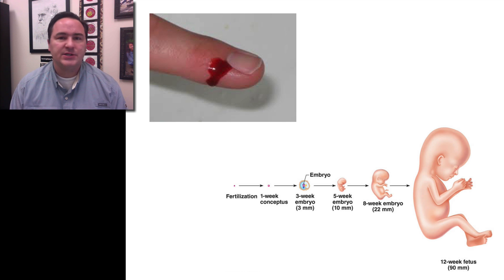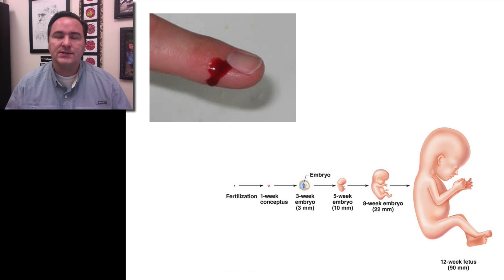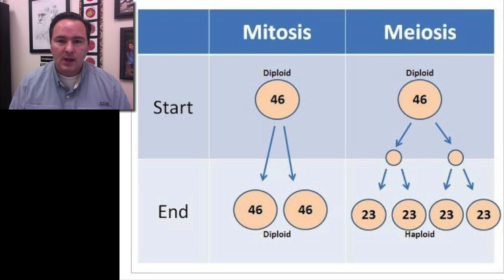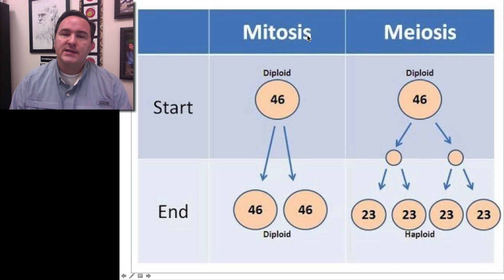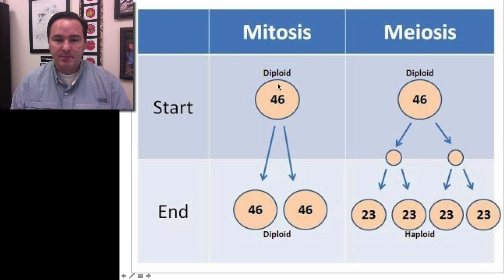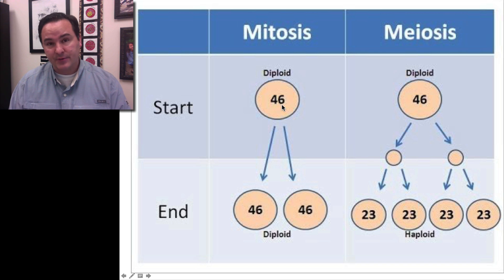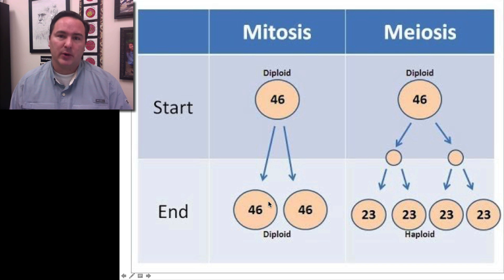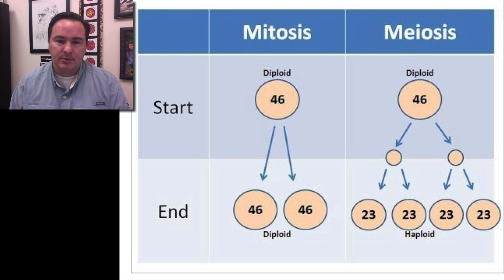This is a different type of cell division — cell division that results not in the production of gametes, but simply in more cells that are identical to the parental cells. And we call this mitosis. So mitosis is cell division where you start off with one diploid cell — in humans that's 46 chromosomes, 23 pairs — and the end result is to have two diploid cells that are exactly the same as the starting diploid cell, the parental cell.